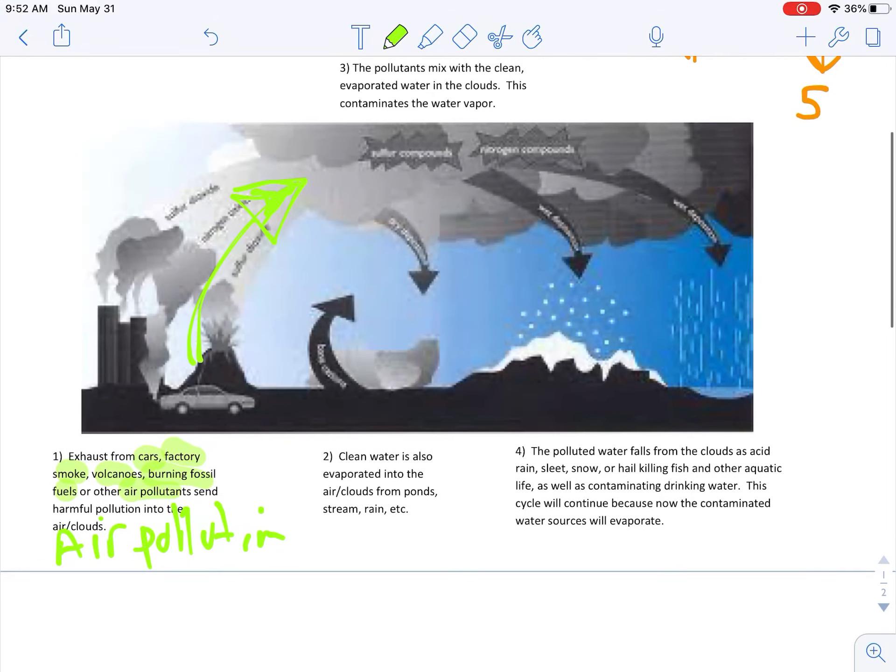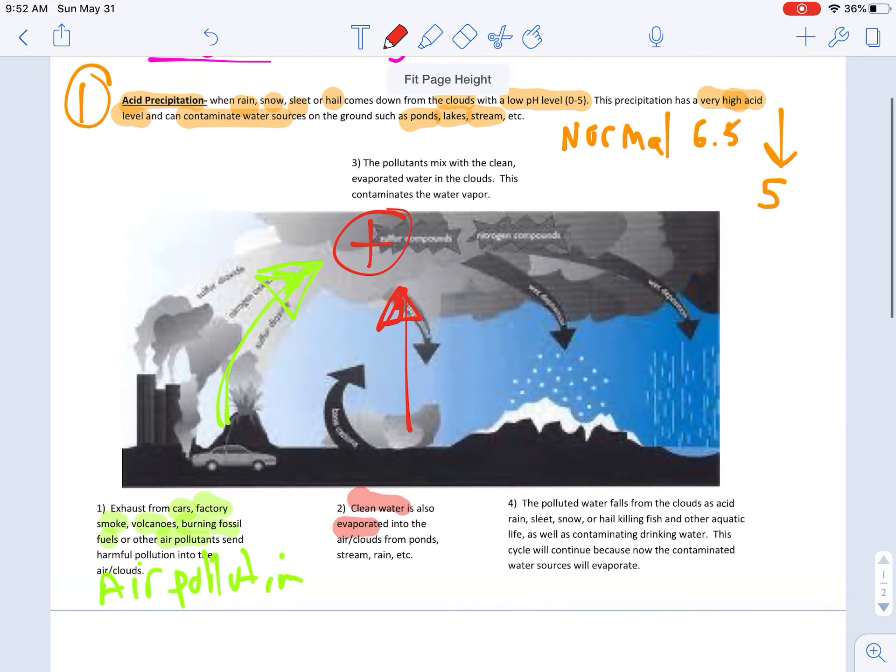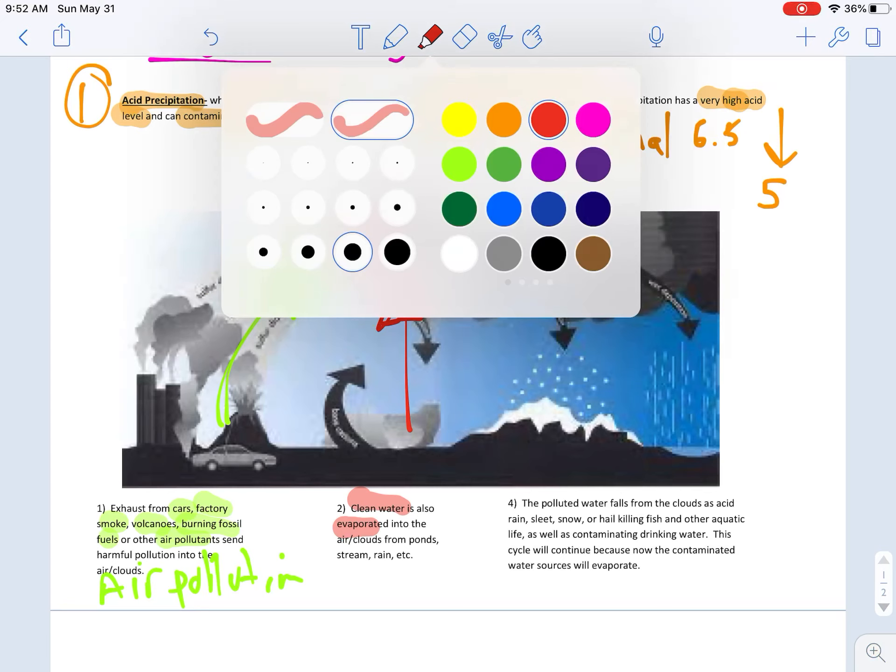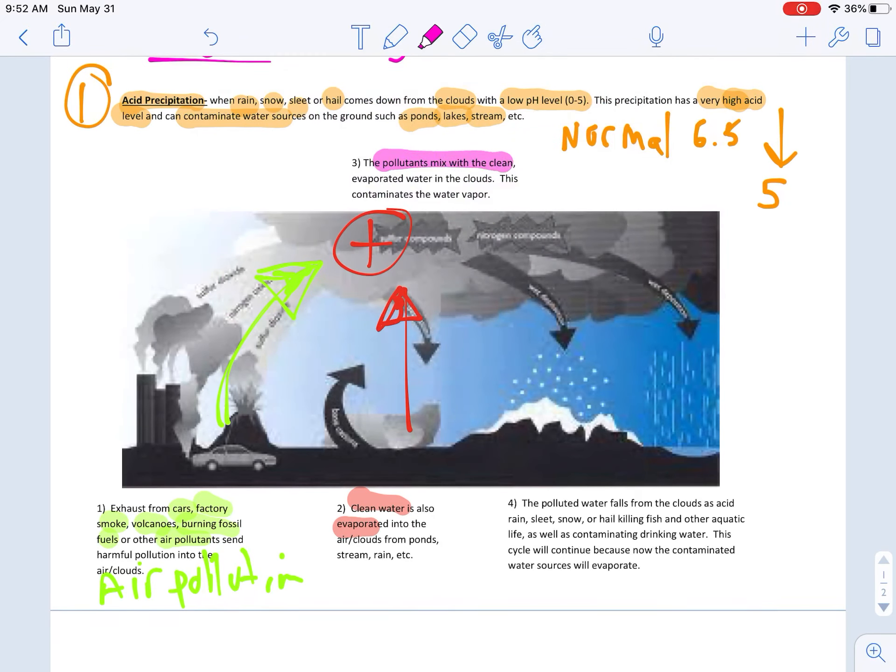Number two, the second part of this is that while that's happening, clean water is also being evaporated into the clouds. So now you have clean water also being evaporated. And guess what those two do? They meet up. The air pollutants mix together with all the clean evaporated water. And of course, you can imagine what happens. The pollutants mix with the clean evaporated water in the clouds. This contaminates the water vapor.